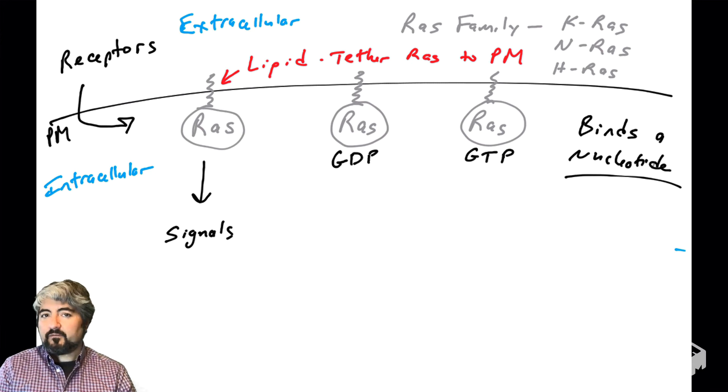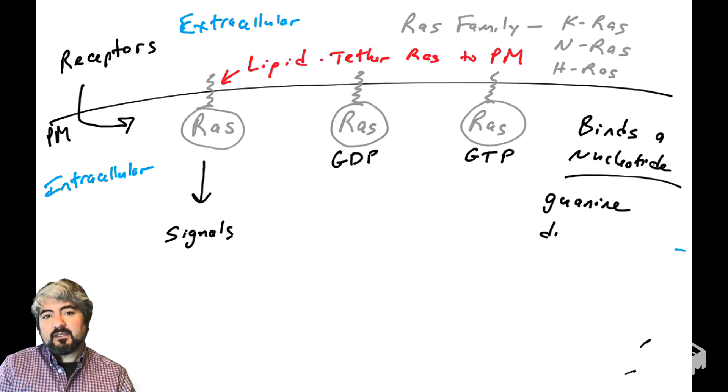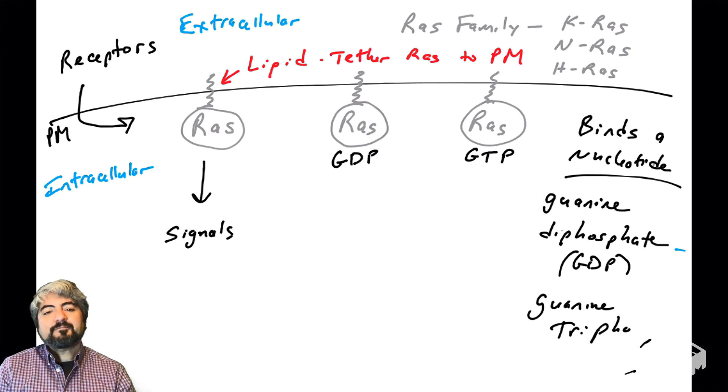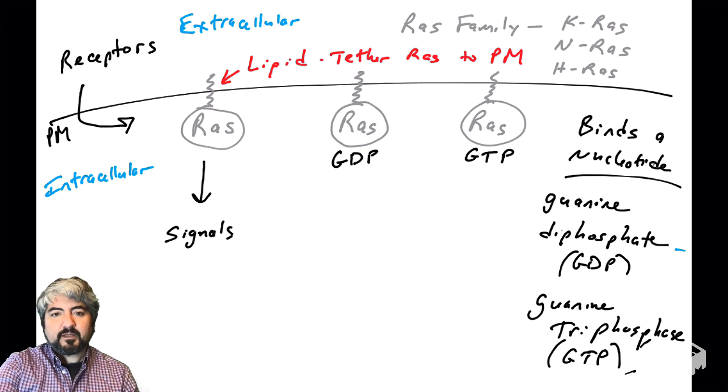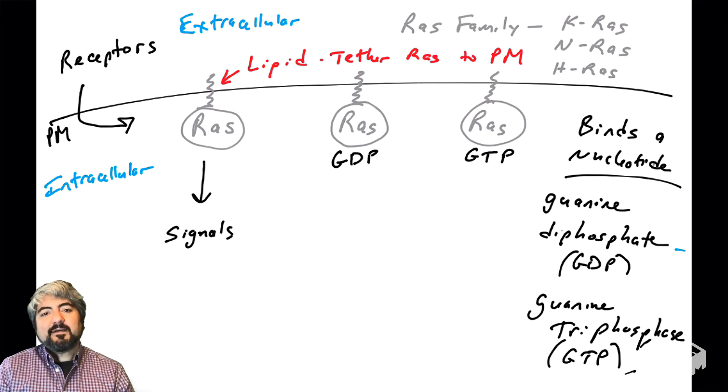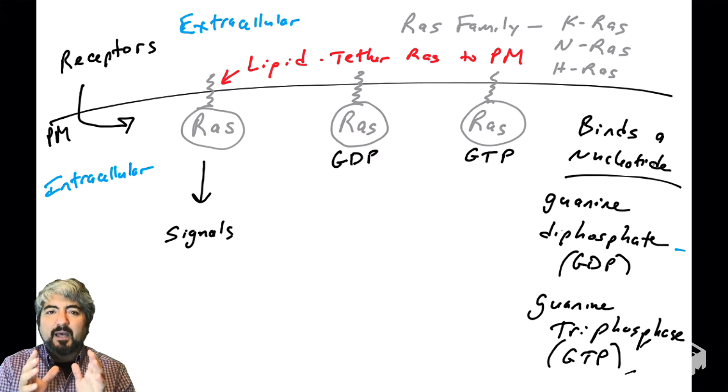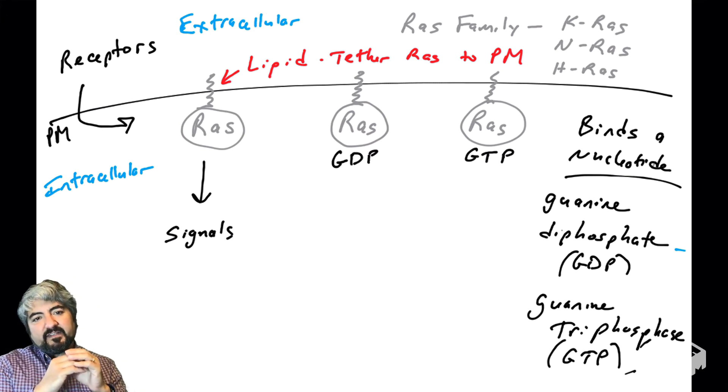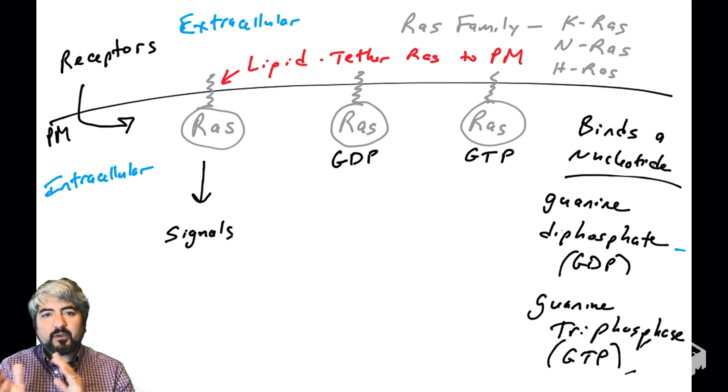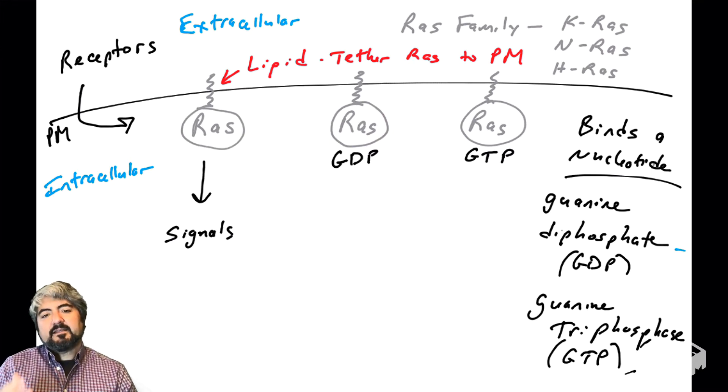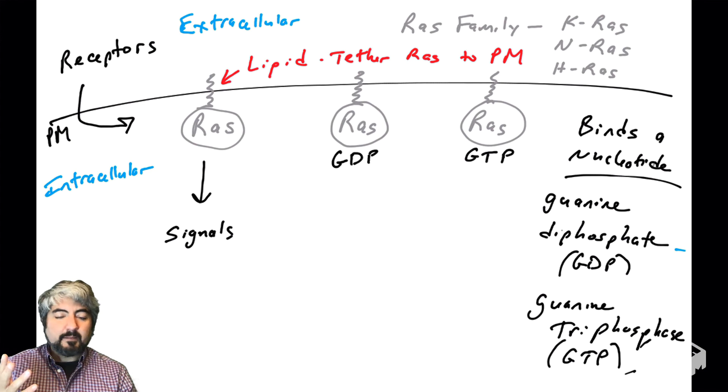GDP is guanine diphosphate—two phosphates—and GTP is guanine triphosphate. RAS can be bound with either one of these nucleotides. It has a binding pocket and that pocket fits GDP or GTP. It can't bind both at the same time—it binds one or the other.